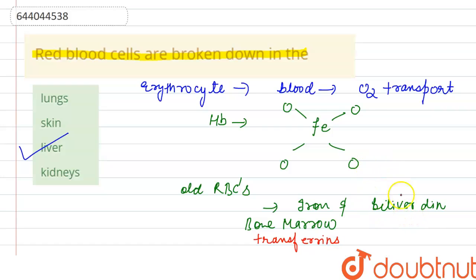And this bilirubin is excreted through the digestive system bile. From the liver, this bilirubin will be sent to the gallbladder where it is stored and where it is released.